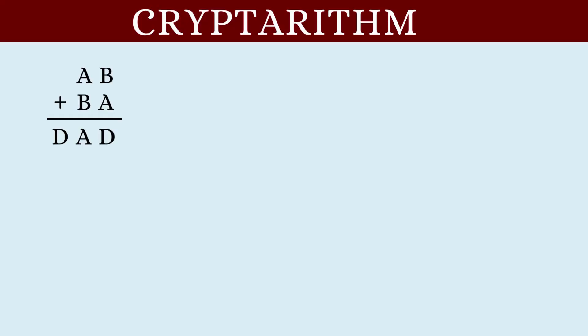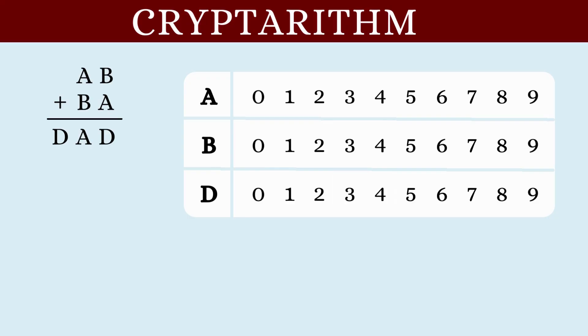AB plus BA is DAD. The alphabets whose numerical value has to be found are A, B and D. First, let us list out all the possible values these alphabets can take. They are 0 to 9. According to our first rule, the numbers AB, BA and DAD cannot start with a 0. This means that A, B and D cannot be 0. So let us first eliminate 0.